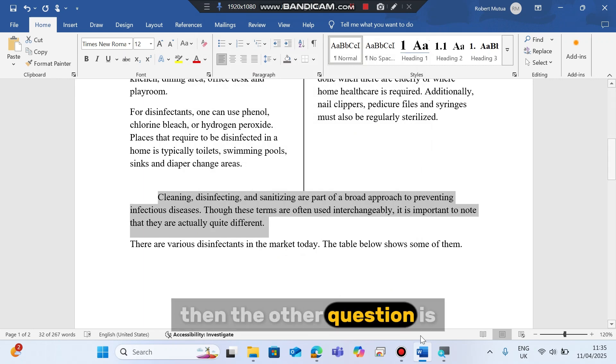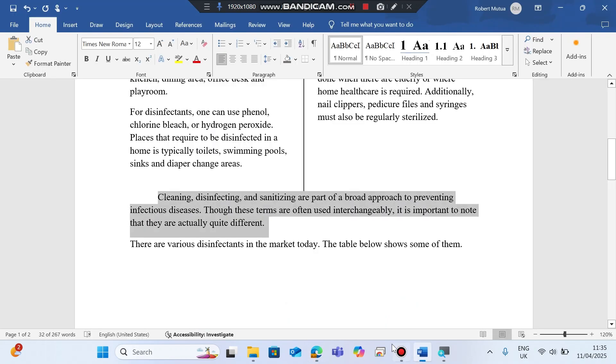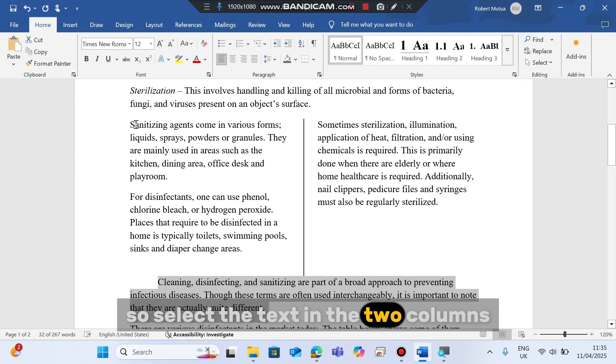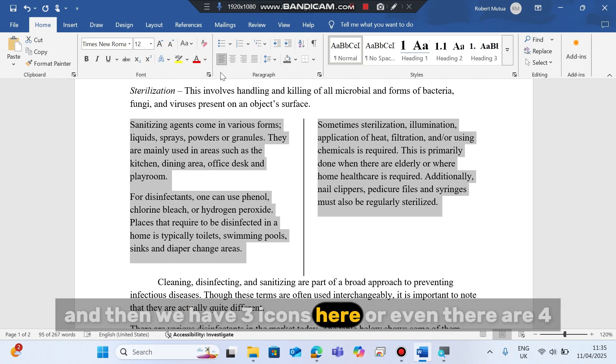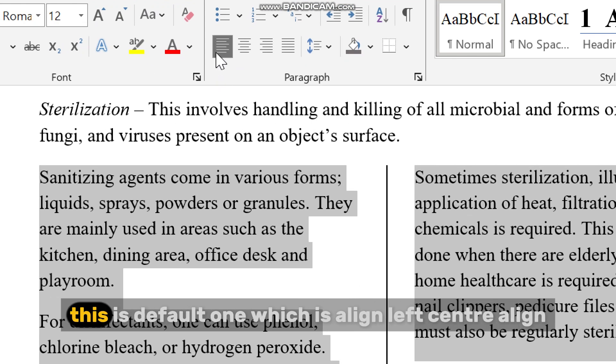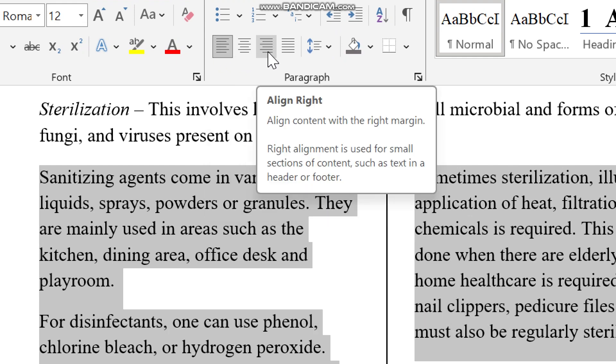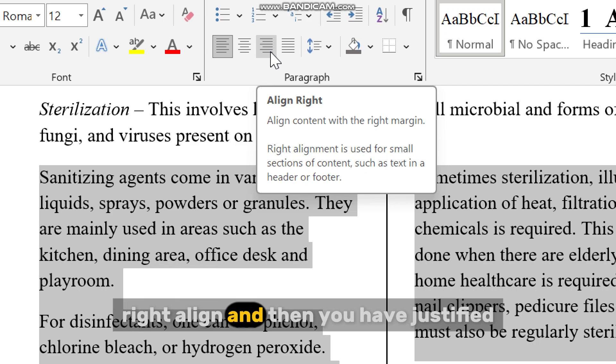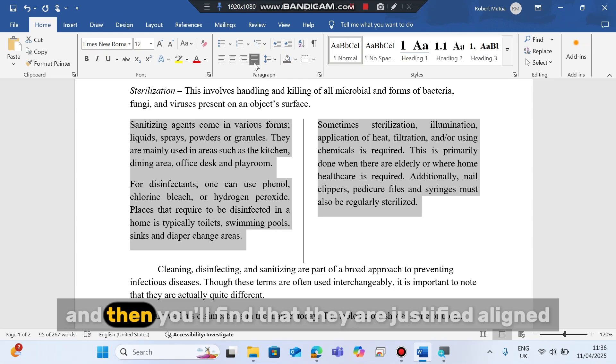Then the other question is apply justify alignment to the text in two columns. So select the text in the two columns. Then from home tab, we're going to find paragraph. And then we have three icons here, or even four. This is the default one which is align left, center align, right align, and then we have justified. Click it. And then you'll find that they are justify aligned.